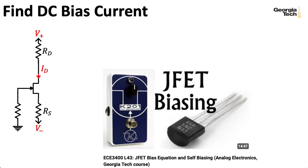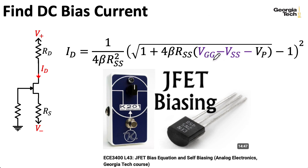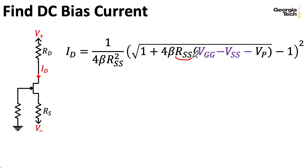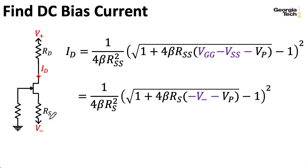In a previous lecture, we computed this equation for the DC bias current in terms of a Thevenin equivalent voltage VGG seen looking out of the gate, a Thevenin equivalent voltage VSS seen looking out of the source, and a Thevenin equivalent resistance seen looking out of the source RSS. In this particular case, RSS is just RS. VGG is zero, so it doesn't appear in this expression. VSS is just V minus. And remember, V minus is going to be negative, so minus V minus is going to be positive. Also remember the pinch-off voltage of a JFET is negative, so minus VP is also a positive number.